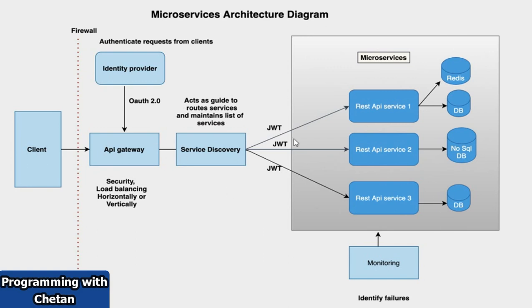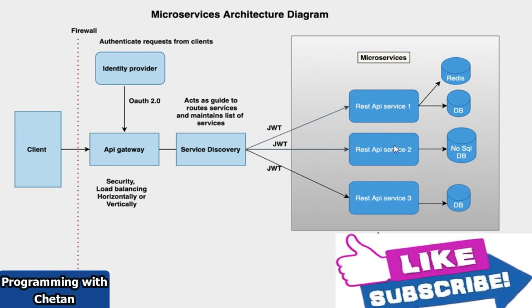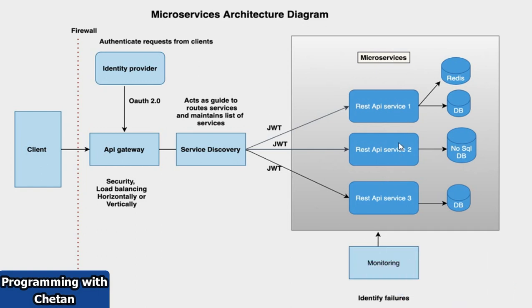Next we have service discovery. Service discovery is used to route your request to the respective microservice. Here we can manage different services, and if different microservices want to interact with each other, that is also possible using the service discovery module.